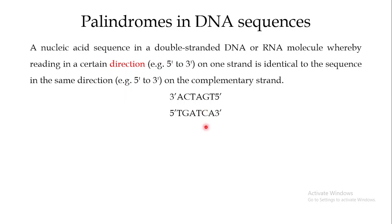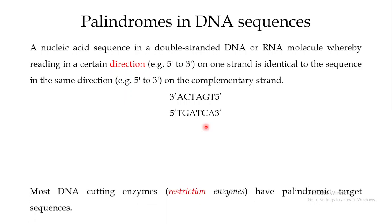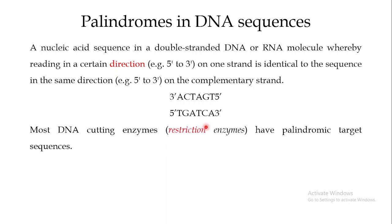Now why are these palindromic sequences important? The first important thing is that most DNA cutting enzymes — which we technically call restriction enzymes — have palindromic target sequences. So identifying a particular palindrome in the DNA sequence can help you identify the cutting site for a restriction enzyme.